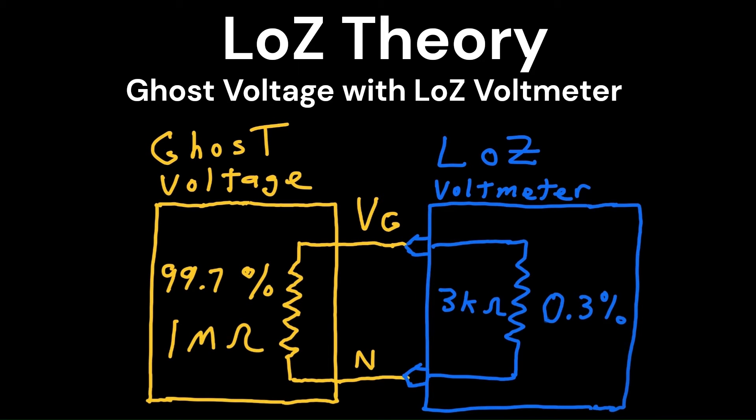However, low Z brings things into light. The low input resistance, typically around 3000 ohms, of the low Z mode puts a load on the circuit, letting you know that you have a problem.